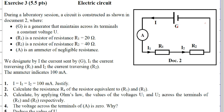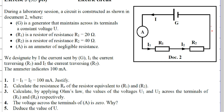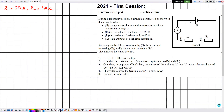R1 is a resistor with resistance R1 equal to 20 ohms, and R2 is a resistor with resistance R2 equal to 40 ohms. A is an ammeter of negligible resistance. We designate by I the current sent by G, I1 the current through R1, and I2 the current through R2 as indicated in document 2. The ammeter reads 100 milliamps. The trick in solving such exercises is to label the currents and voltages on the circuit itself.